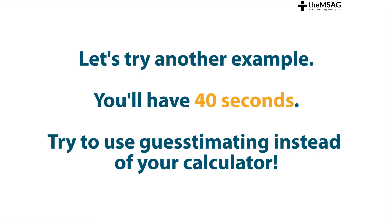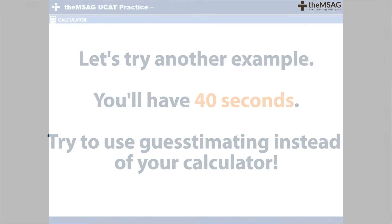Guesstimating is one of the best strategies in the UCAT to become one of the top scoring applicants, so let's practice this again with a different type of question. Once again, don't use the calculator even if you know how to do it with it. Try to think of how you could do it faster than your initial instinct.